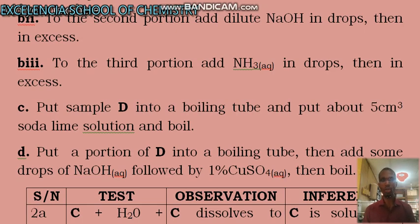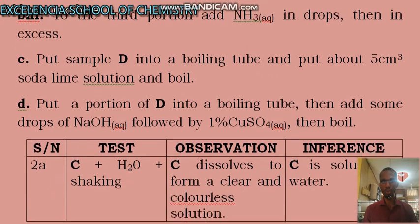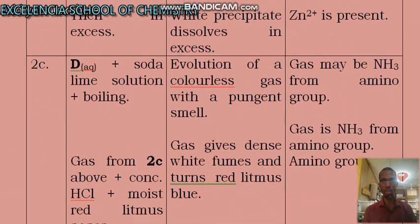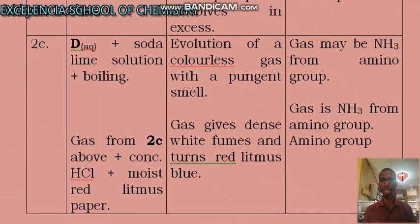We are going to experience evolution of a pungent smelling gas, which turns moist red litmus paper blue and gives dense white fumes with concentrated HCl. And that points towards the gas being ammonia.